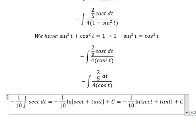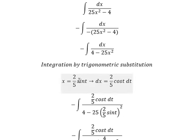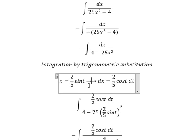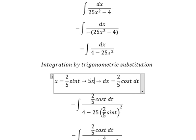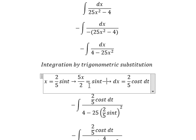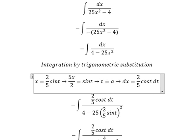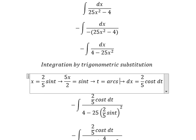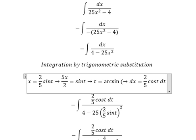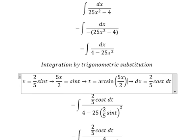We have t in here, we need to change. You got 5x over 2 equals to sine t, so you got t equal to arcsine of 5x over 2. So we put this one in here.